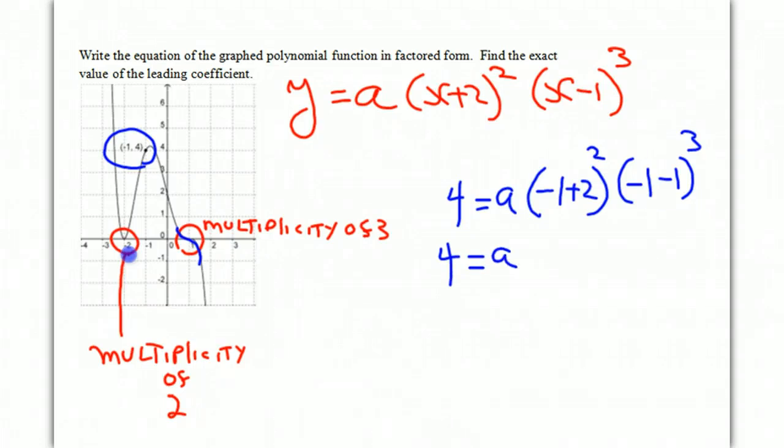Negative 1 plus 2 is 1, so that's squared. Negative 1 minus 1 is negative 2, and that's cubed. 1 squared is 1, and negative 2 times negative 2 times negative 2 is negative 8. So we get negative 8a is equal to 4.